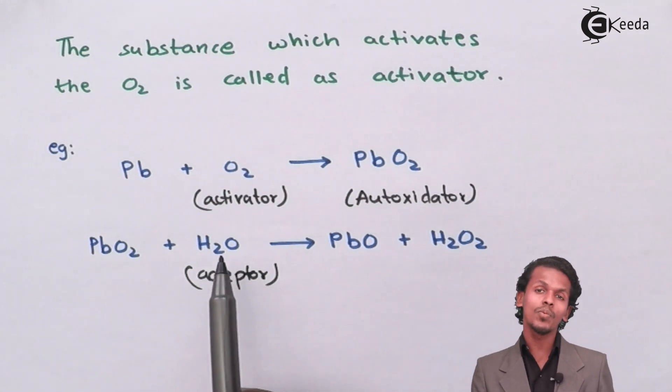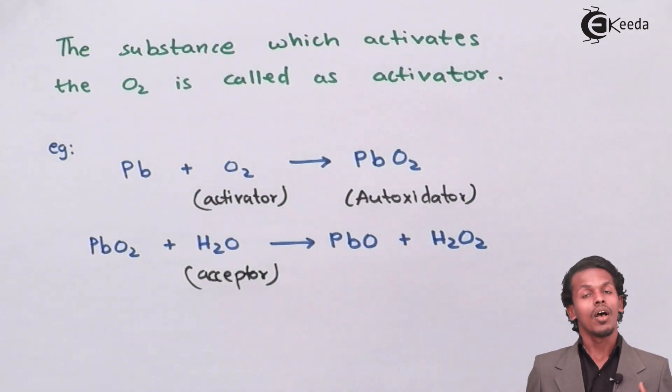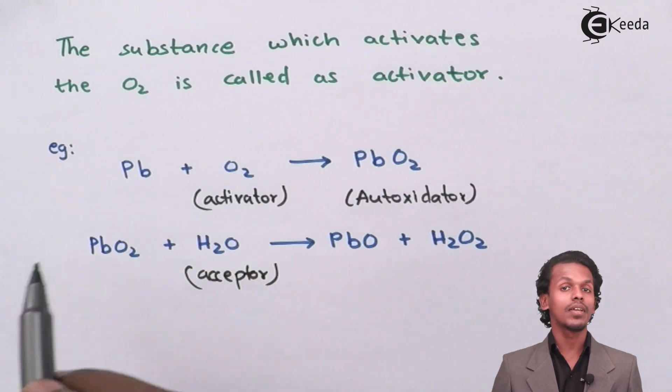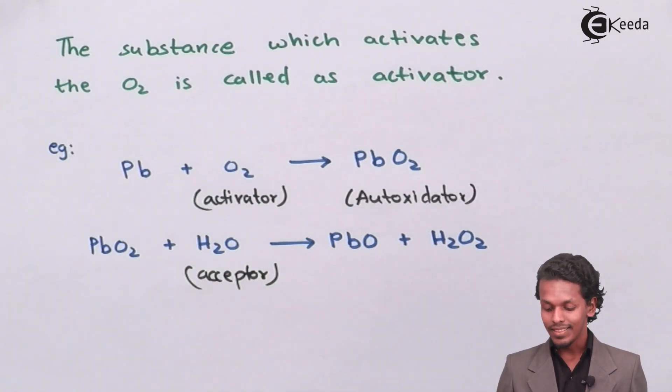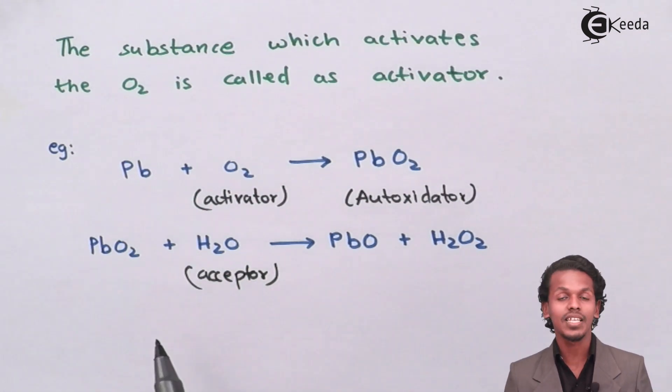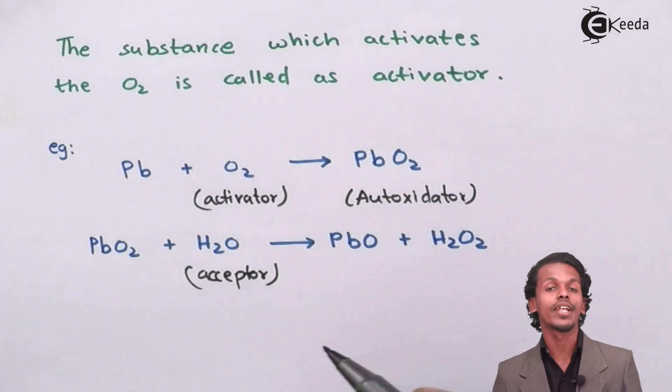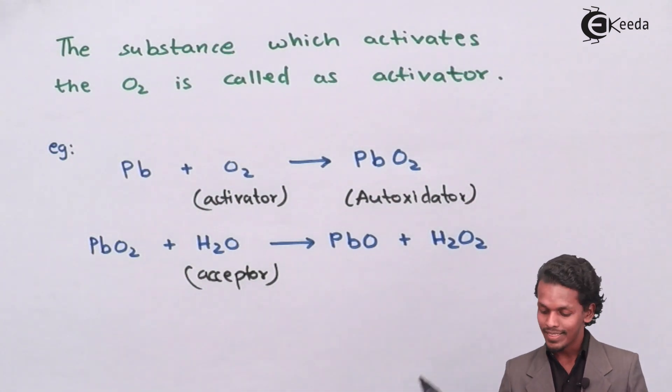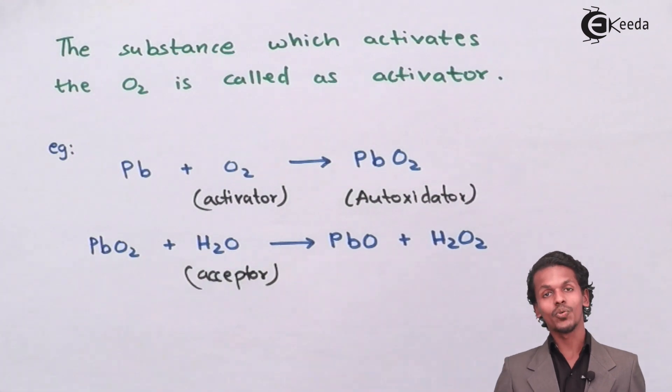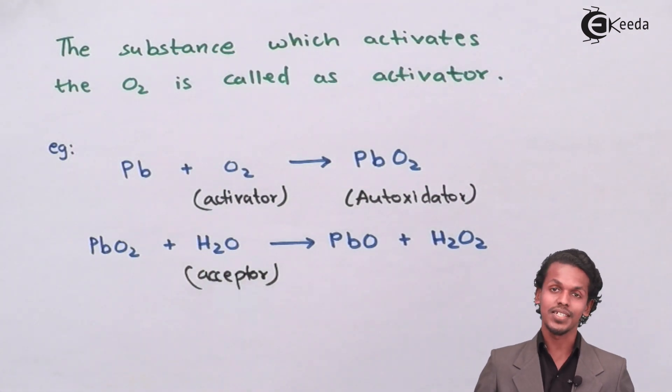So in this case the H2O molecule will accept the oxygen that is present in PbO2 and hence this H2O that accepts the oxygen will convert into H2O2 and this oxidation of H2O to H2O2 is known as autoxidation.